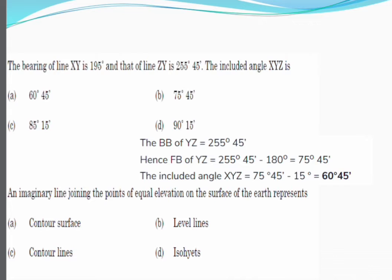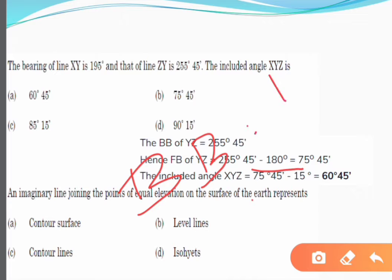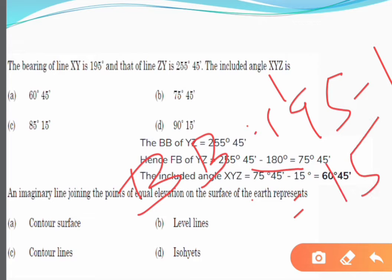When fore bearing is greater than 180 degrees, back bearing equals fore bearing minus 180 degrees. Here, the back bearing of YZ is 255 degrees 45 minutes. Since this is greater than 180 degrees, the negative sign is used: fore bearing of YZ = 255°45′ − 180° = 75°45′. Also, back bearing of XY = 195° − 180° = 15°.